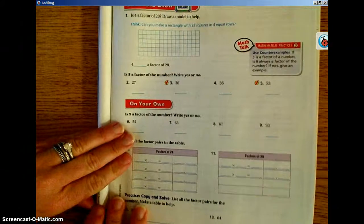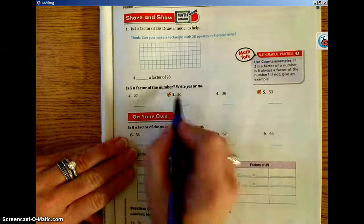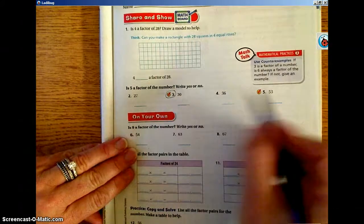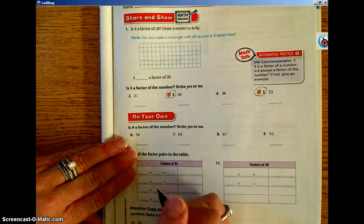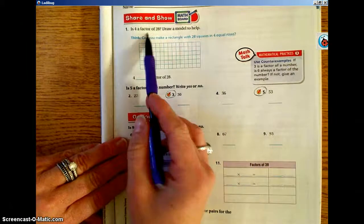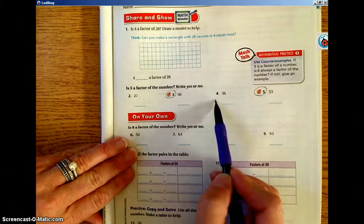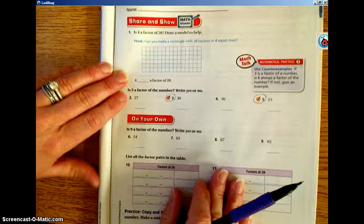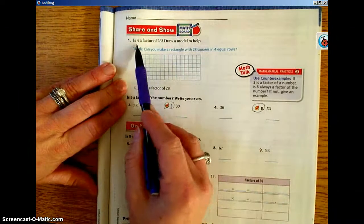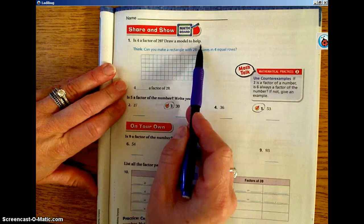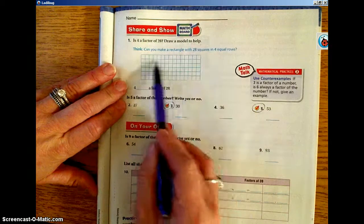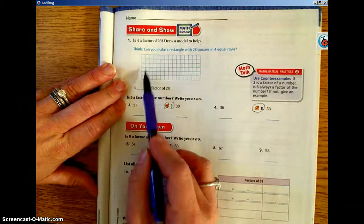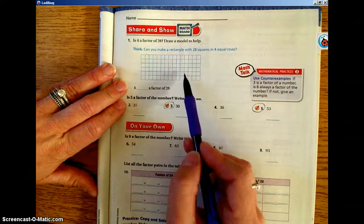Go ahead and flip to the next page to share and show. You're going to start with number 3 and number 5, and then go back and complete 1, 2, and 4. Your directions read, number 1, is 4 a factor of 28? Draw a model to help. So it wants you to make a rectangle of 28 squares and 4 equal rows. Can you do it?